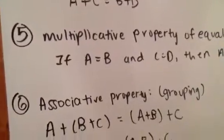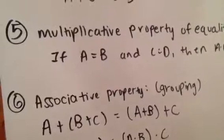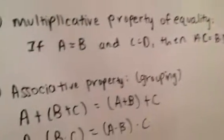Now, same goes for the multiplicative property of equality, very similar, just changing the operation sign. So if A equals B and C equals D, then A times C equals B times D.